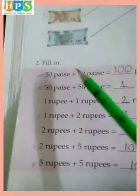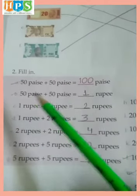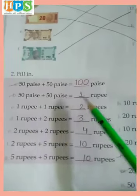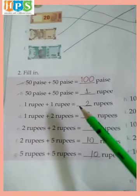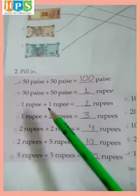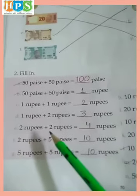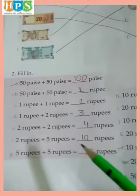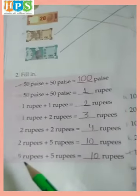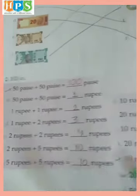Fill in: 50 paise plus 50 paise is equal to 100 paise. 50 paise plus 50 paise is equal to 1 rupee. 1 rupee plus 1 rupee is equal to 2 rupees — 1 and 1 equals 2. 1 rupee plus 2 rupees is equal to 3 rupees. 2 rupees plus 2 rupees is equal to 4 rupees. 2 rupees plus 5 rupees is equal to 10 rupees. 5 rupees plus 5 rupees is equal to 10 rupees.